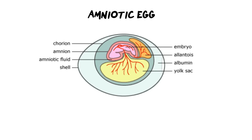In any test or exam you will be expected to draw the amniotic egg — you should be able to draw it, label it, and describe the functions of all structures inside it. Starting with the outermost layer, the shell provides protection and incubation. Moving inward, the albumin — the egg white in a chicken egg — allows the developing embryo to float so it's undamaged. Then there is the chorion, which surrounds all the other membranes and is responsible for gaseous exchange — allowing the embryo to exchange oxygen and carbon dioxide, essentially to breathe.